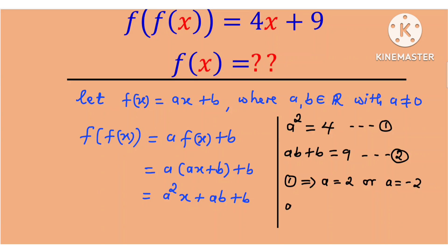And substituting a equal to 2 in equation 2, we have 2b plus b which is equal to 9, and this implies that b is equal to 3.